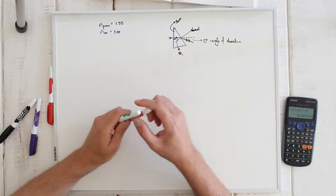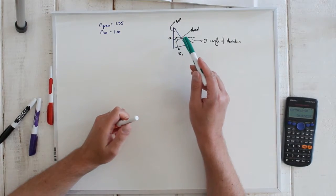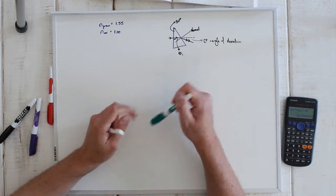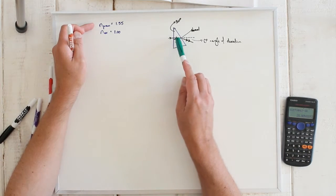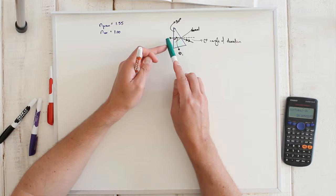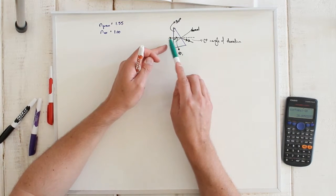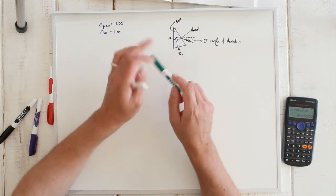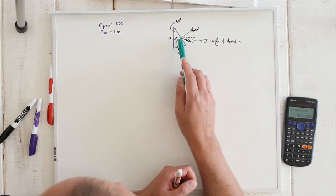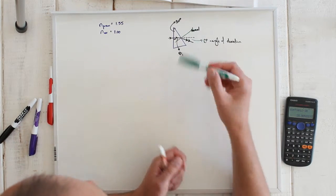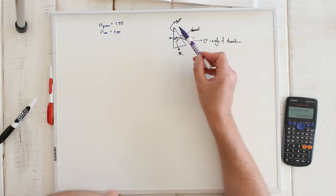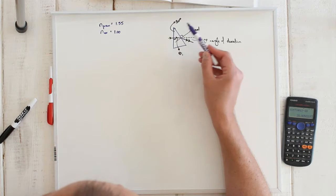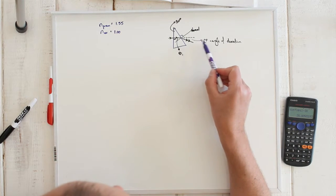Another interesting problem: we have an oddly shaped prism with a refractive index of 1.55. A light ray enters perpendicular to one surface, so there is no refraction there. It then strikes another surface and we are given that one angle of the prism is 30 degrees. We want to find angle D, the angle of deviation — the angle between the original ray direction and the exiting ray.